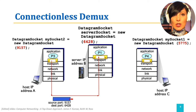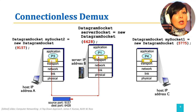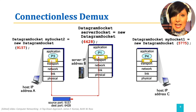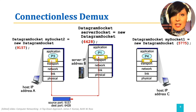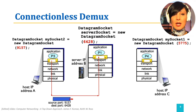Connectionless transport, like UDP, will always deliver all segments that have destination port 6428, regardless of the source port or any additional information, to the same socket for the same process P1.